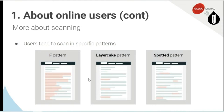So who reckons they might use the F pattern when they're reading? What about the layer cake pattern? I think I probably use that one. I use the F pattern a bit. What about the spotted pattern — does anyone feel they're kind of scanning completely? The reality is a few of you put up your hands more than once, so often we may be using a combination of all three patterns when we're reading content online.